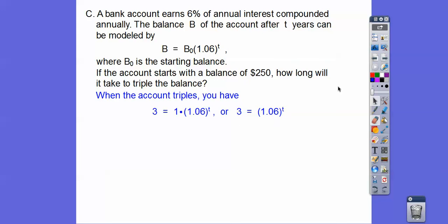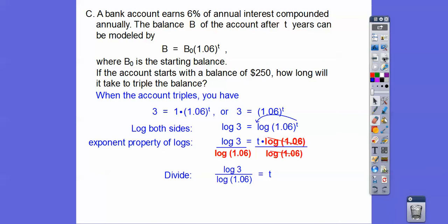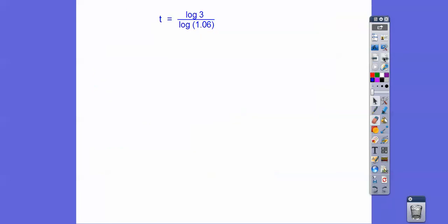Let's log base 10 of both sides. It brings down that exponent. Then divide by log of 1.06. Now we're calculator ready. Punch those into your calculator and you should get about 18.85. So the account's going to triple in about 18.85 years, no matter how much money you put in.